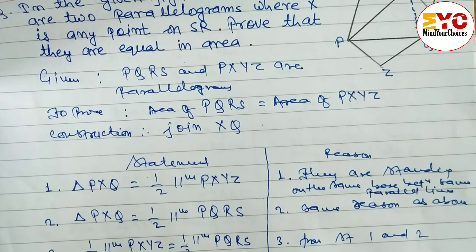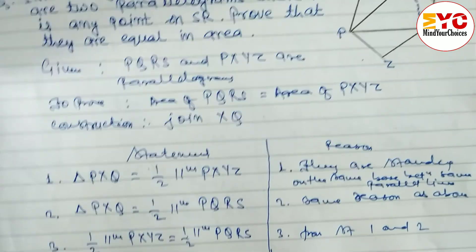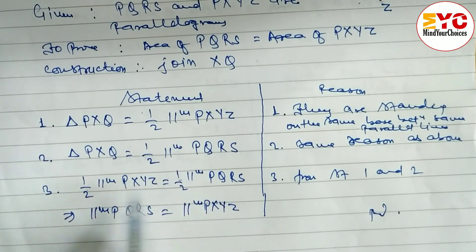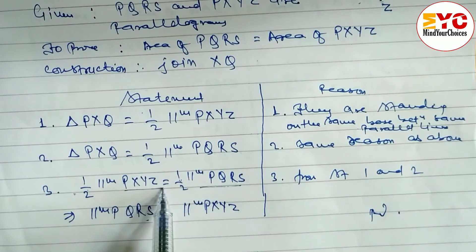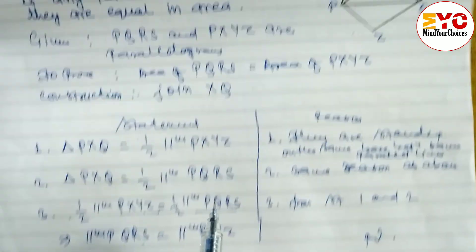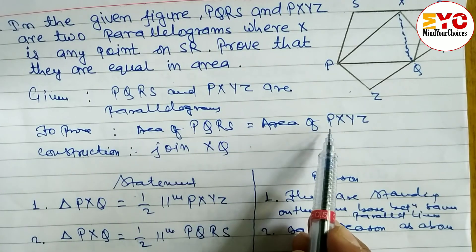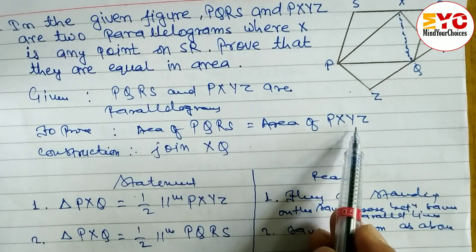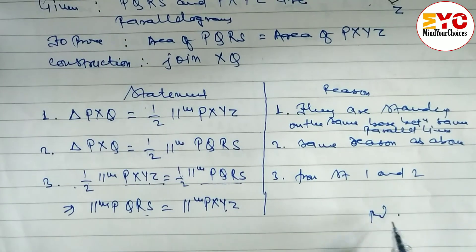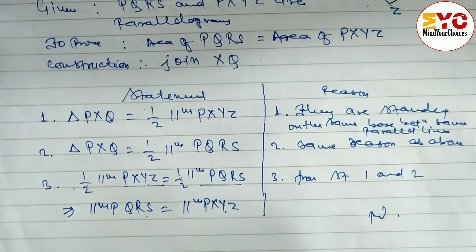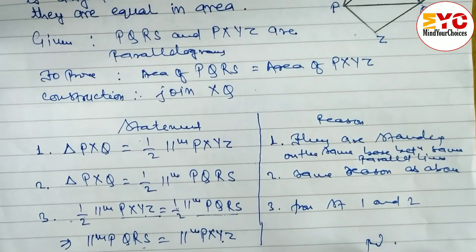The halves cancel, so we have PQRS equal to PXYZ. We have proved that area of PQRS is equal to area of PXYZ. Hence proved.